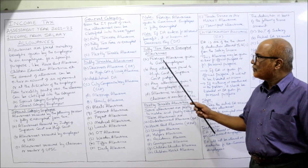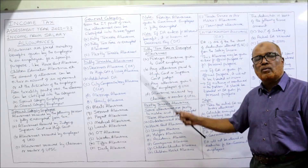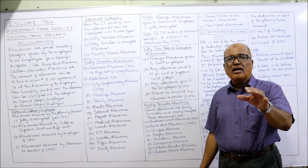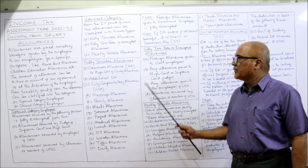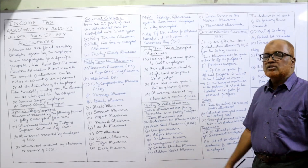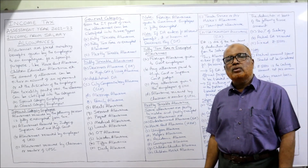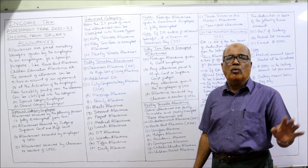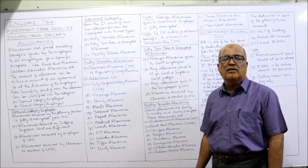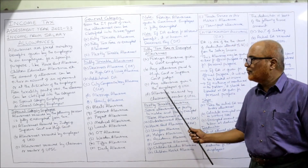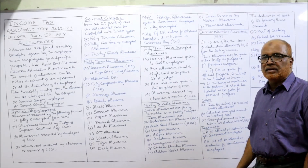For fully exempted allowances — in exams you may be asked for five examples. These include: foreign allowance given by government to employees serving abroad — fully exempted; any allowance paid to High Court or Supreme Court judges — fully exempted; any allowance given to employees of UNO — fully exempted; any allowance given to the chairman or member of UPSC — fully exempted.